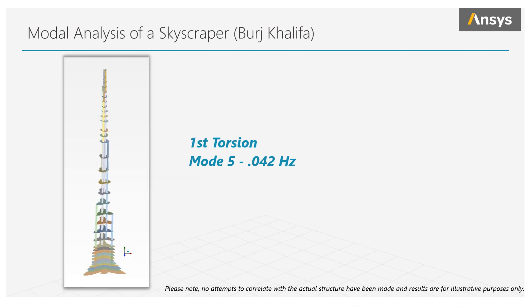Mode number five is the first torsion mode, and notice this deformation shape is very different than the others. If a building was not made stiff enough and its design permitted it to be excited in the torsion direction, say by wind, the building would rotate about its axis. This twisting motion could also make the occupants near the top feel uneasy as the building rotates beneath them.